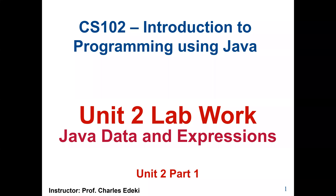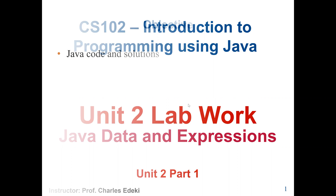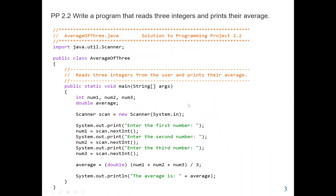Welcome to CS102, Introduction to Programming Using Java. This is Unit 2 lab work, which covers Chapter 2 of our course textbook, Data and Expressions. In this lab work, we are going to solve two questions using Java programming language. Our first question is to write a program that reads three integers and prints the average.